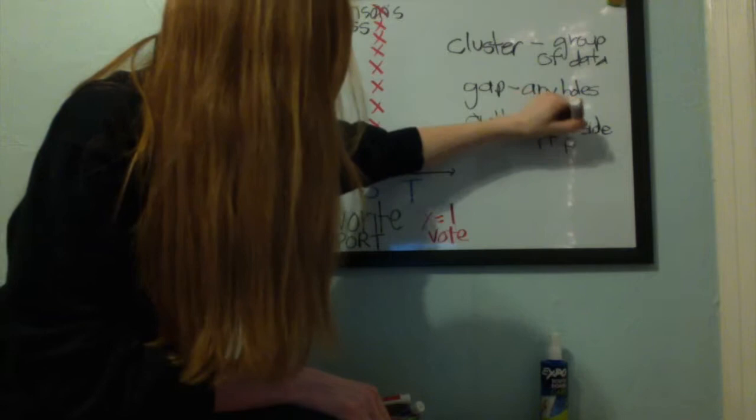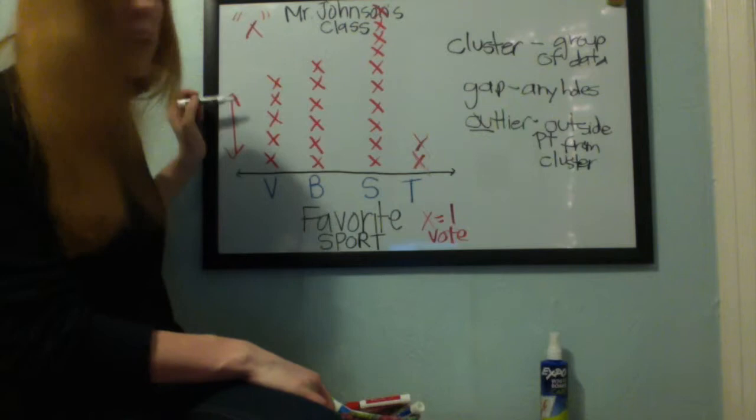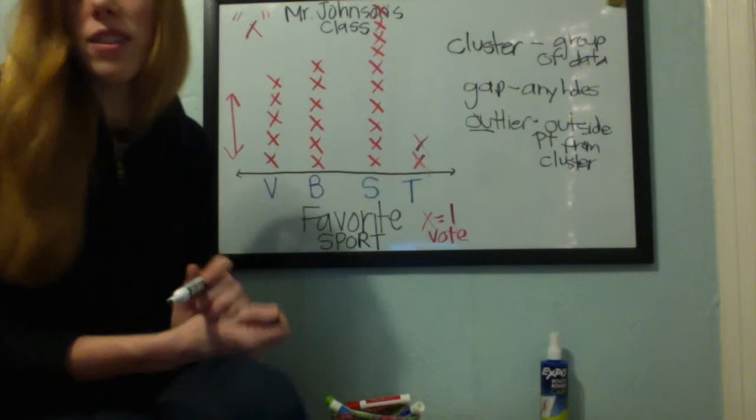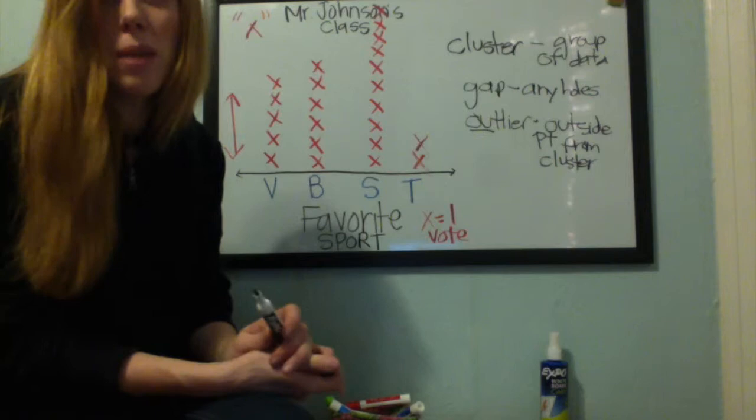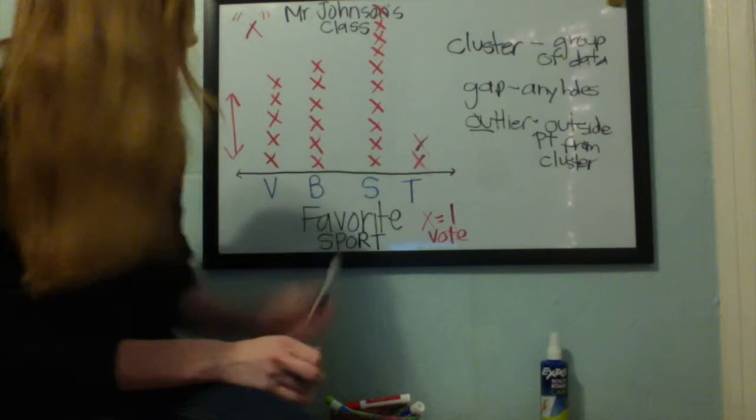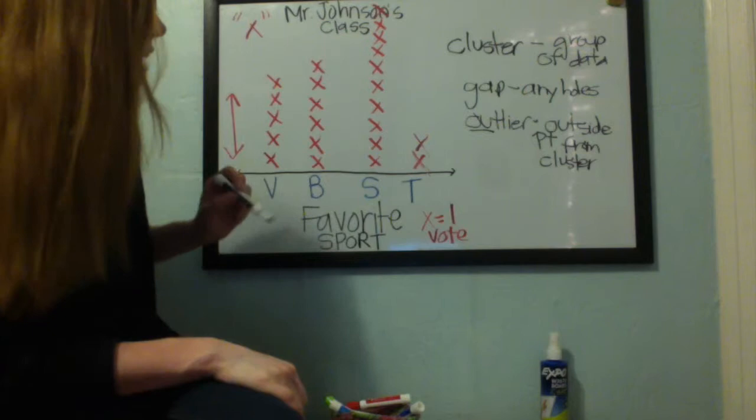On the STAR test, when you look at your line plot, make sure you have every label as well as the title. You want to have a scale — in this case, x equals one vote. A common question may ask: are there any gaps? We look and since each plot is pointed, there are going to be no gaps. We could say that we have a cluster right in here from basketball and soccer — those are the two highest that are going to be grouped together.